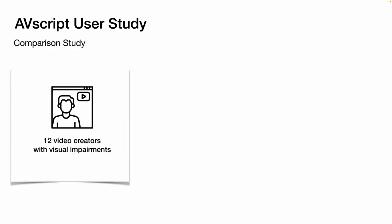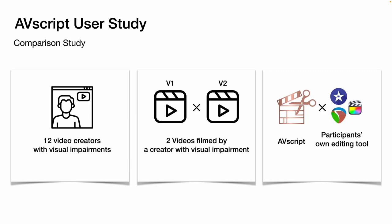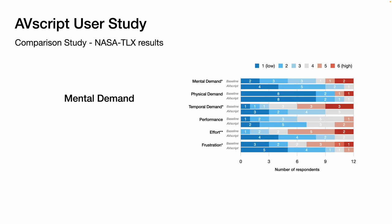We evaluated AVScript with 12 video creators with visual impairments, where they edited two videos filmed by a creator with visual impairment — one using AVScript and one using their own editing tool. Compared to the editing tool that they are already familiar with, participants using AVScript reported significantly lower mental demand, temporal demand, and effort required in video editing.